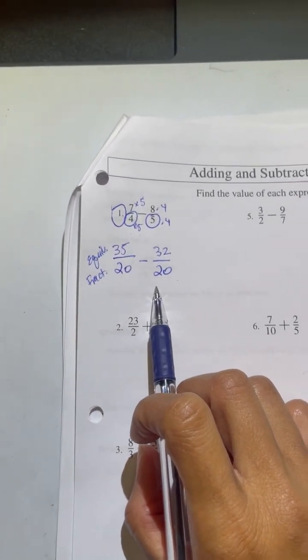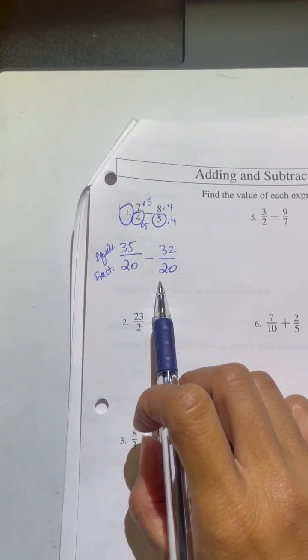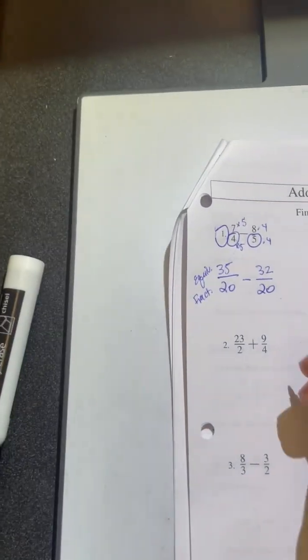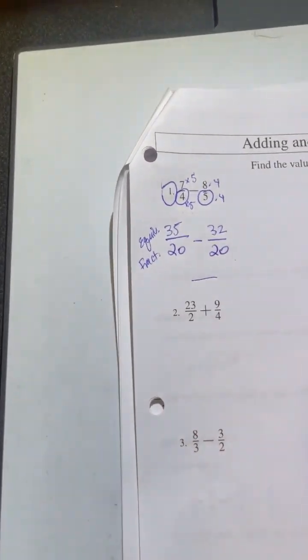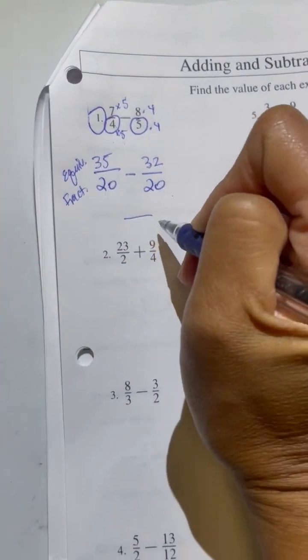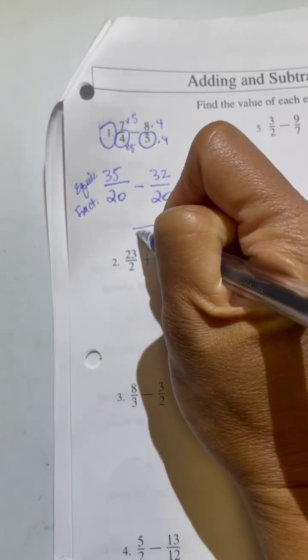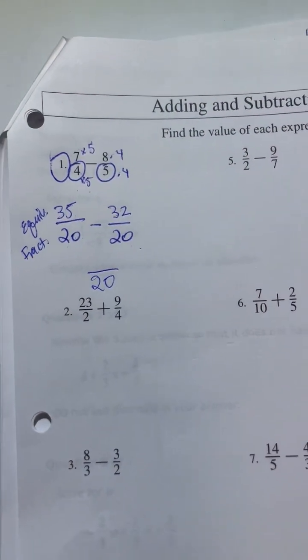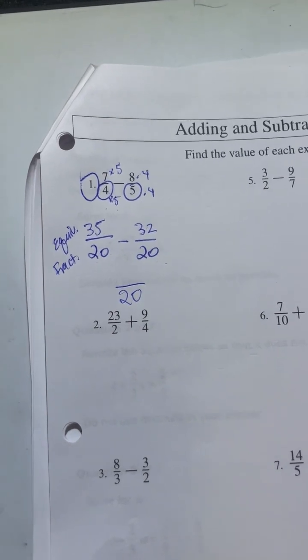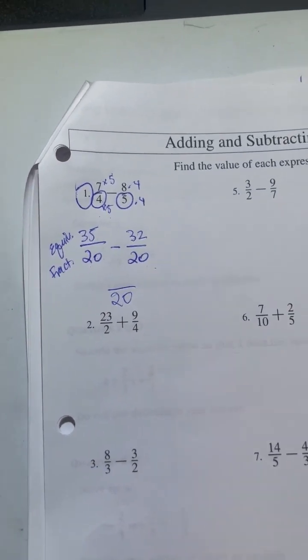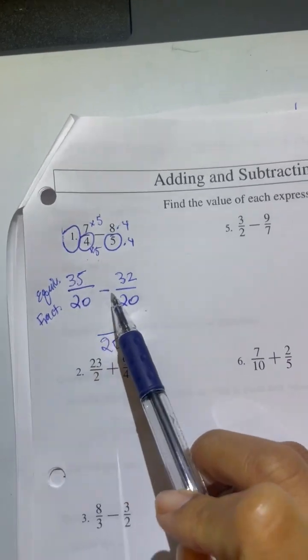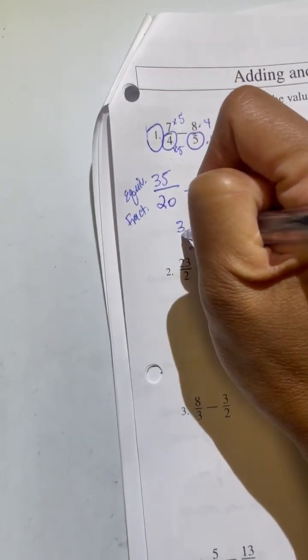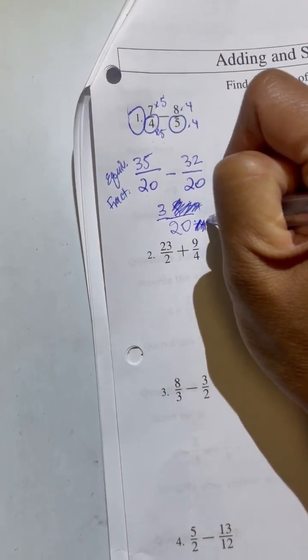So now what do I do? Now I can combine them. Now I can subtract them because why can I do that now? We have the same denominators. So the bottom becomes 20. You keep the denominator the same. So we always keep the denominators the same once we have common denominators. And the top, we could either add or subtract depending on the problem. What's 35 minus 32? 3. So the answer is 3 over 20.